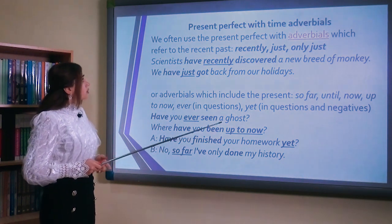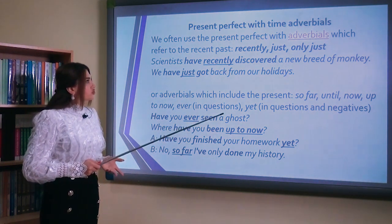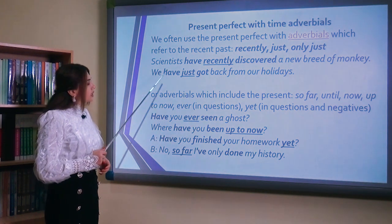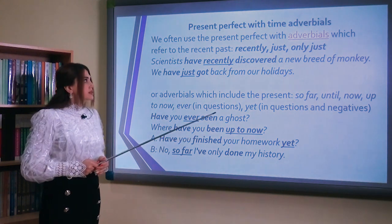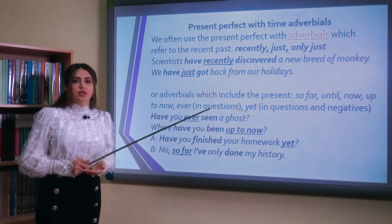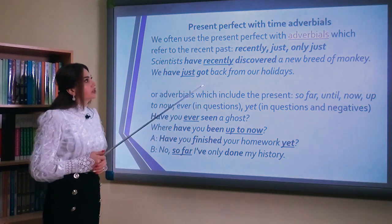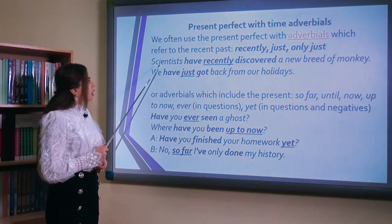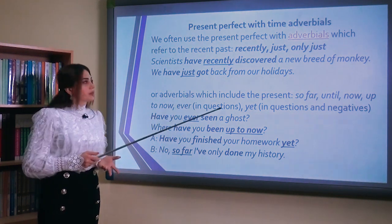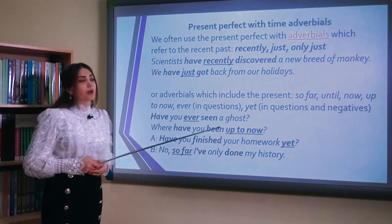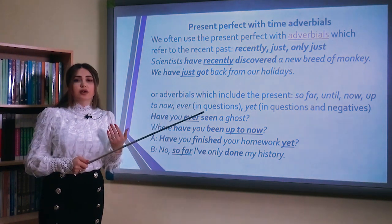Present perfect with time adverbials. We often use the present perfect with adverbials which refer to the recent past: recently, just, only just. For example: scientists have recently discovered a new breed of monkey. We have just got back from our holidays. Recently — son zamanlar; just — indicə deməkdir. Həmçinin since və for sözlərindən də istifadə edirik.